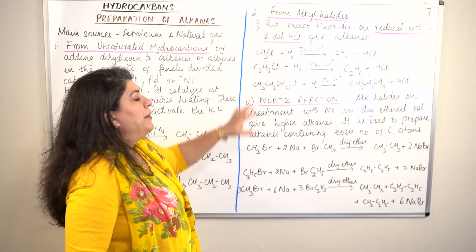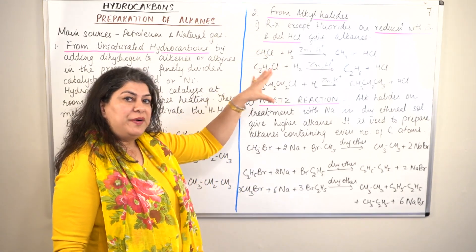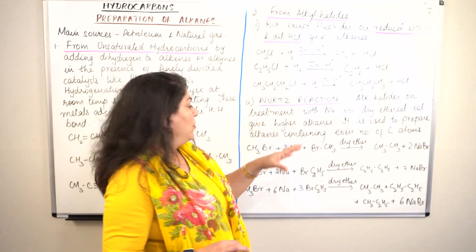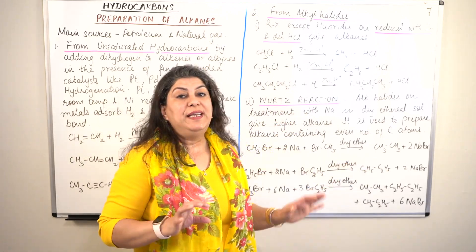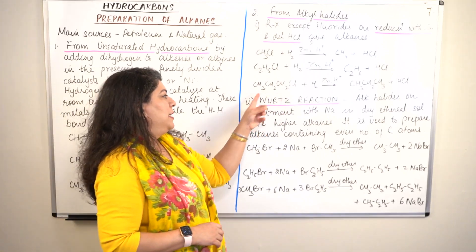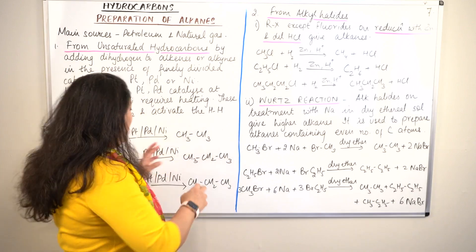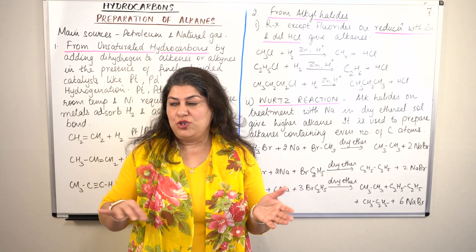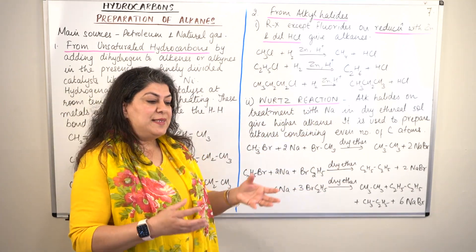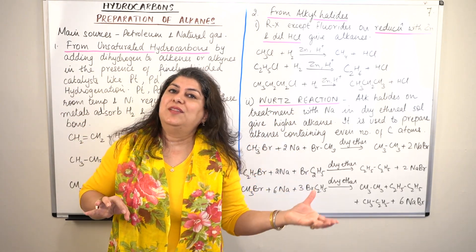The other way to prepare alkanes from alkyl halides is by a reaction known as the Wurtz reaction, named after the scientist Wurtz. In simple reduction we used zinc and H⁺. In the Wurtz reaction, instead of zinc and H⁺, we carry it out by treatment with sodium in the presence of dry ether — that is, the conditions are different. In this reaction the halogen is removed from two molecules, and the two remaining alkyl groups are joined together to form the product alkane.